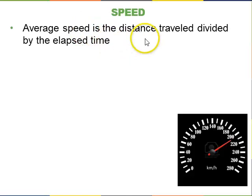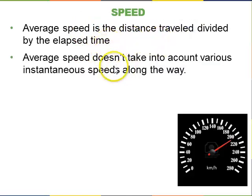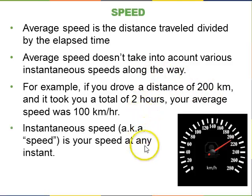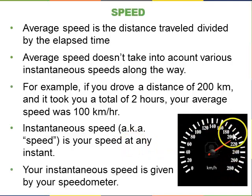So average speed is the distance traveled divided by the elapsed time. And average speed doesn't take into account various instantaneous speeds along the way. For example, if you drove and the total distance on your odometer was 200 kilometers, and it took you two hours, then your average speed was 100 kilometers per hour. Now that doesn't mean that your instantaneous speed was 100 the whole time. So instantaneous speed, also known as speed, is your speed at any instant. That's what's read off on your speedometer. So if your average speed was 100 kilometers per hour, you may have been driving 120 for part of it. You may have got caught in traffic jams and been driving at 50 or even zero for a little bit. But your average speed is still 100 kilometers per hour.